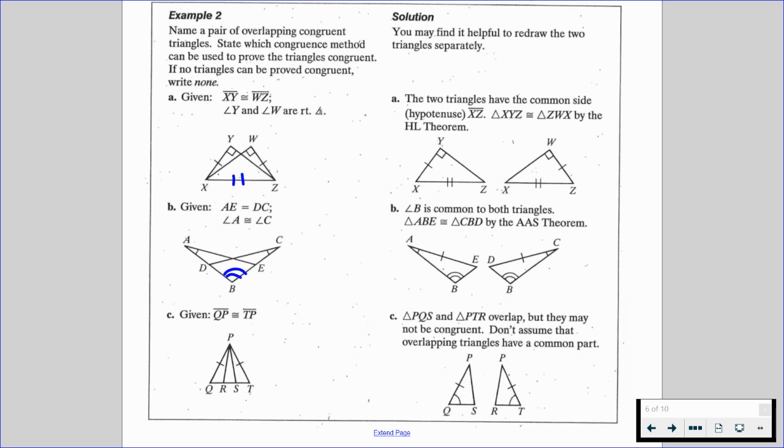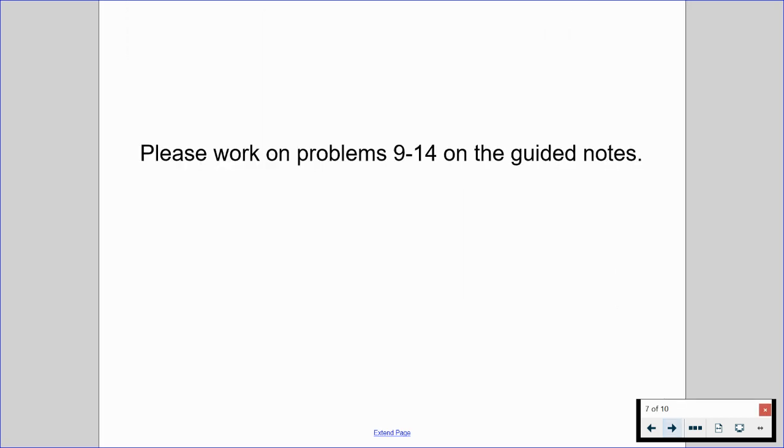triangle PQS and triangle PTR overlap, but they may not be congruent. We don't necessarily have enough information here. The only thing that looks like is the entire triangle, I should say, PQT is isosceles. But that doesn't really tell us enough information because we don't know anything about segment PR nor segment PS, and not even segment QR or any of those other segments down at the bottom. So there's not enough information for us to determine if we have a congruency statement. With this in mind, please work on problems 9 through 14 on the guided notes. And this will take you through the end of part 1.